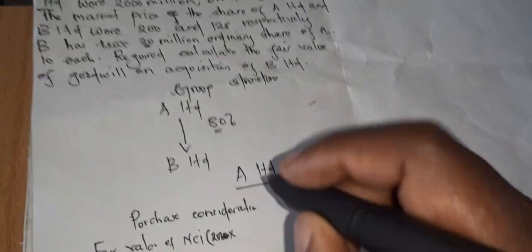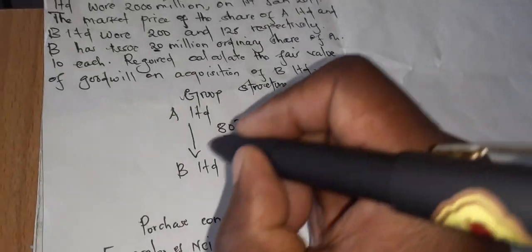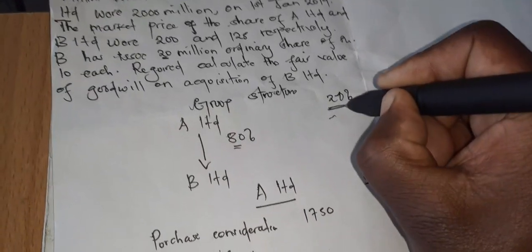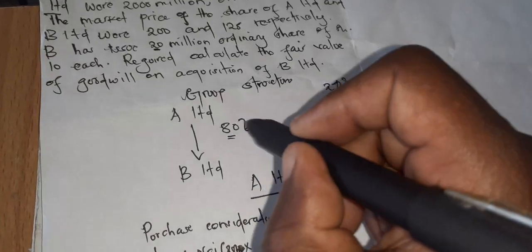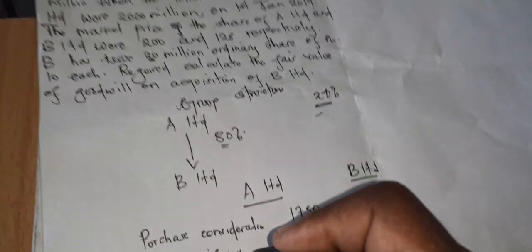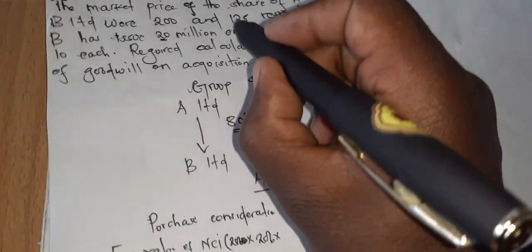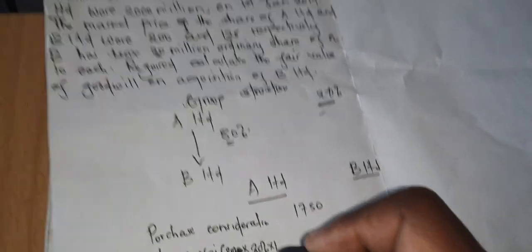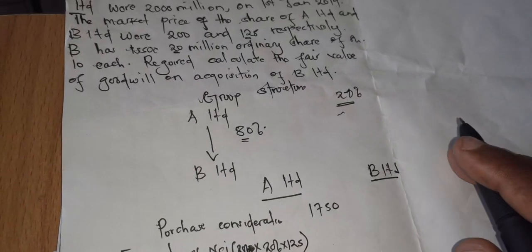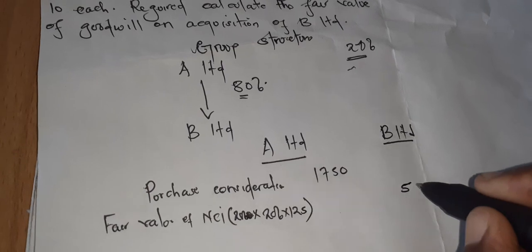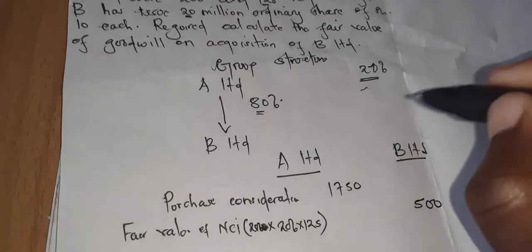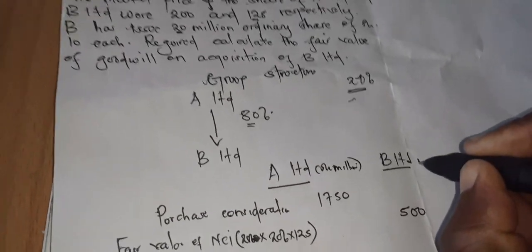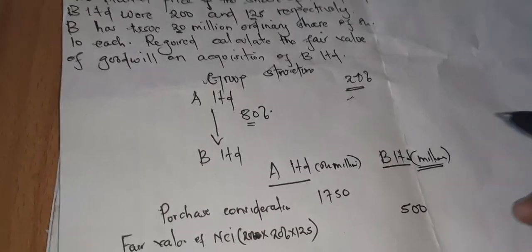20 million we multiply by the 20% because the NCI controls 20%, because the parent company controls 80%. So 20% times the price per share which is 125, giving us 500. So our shilling is in million. This is in million.